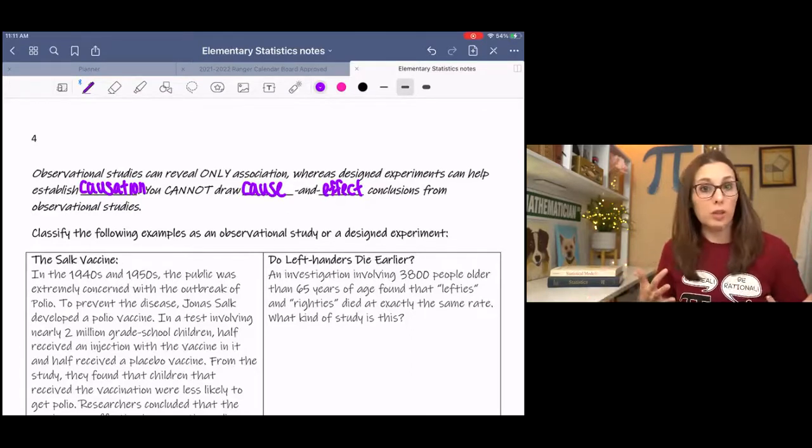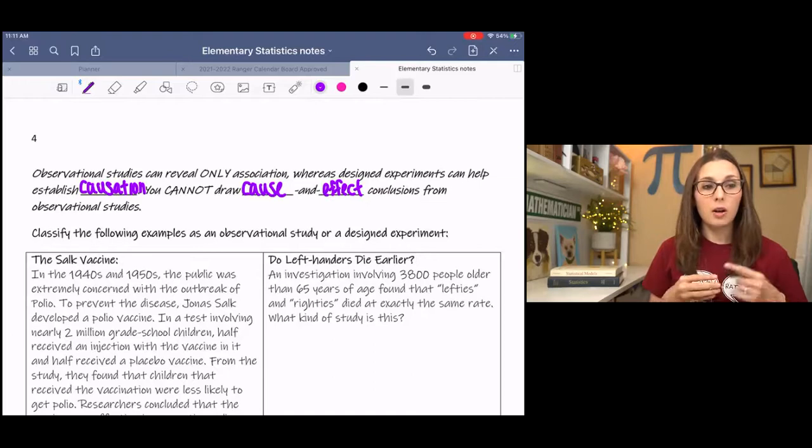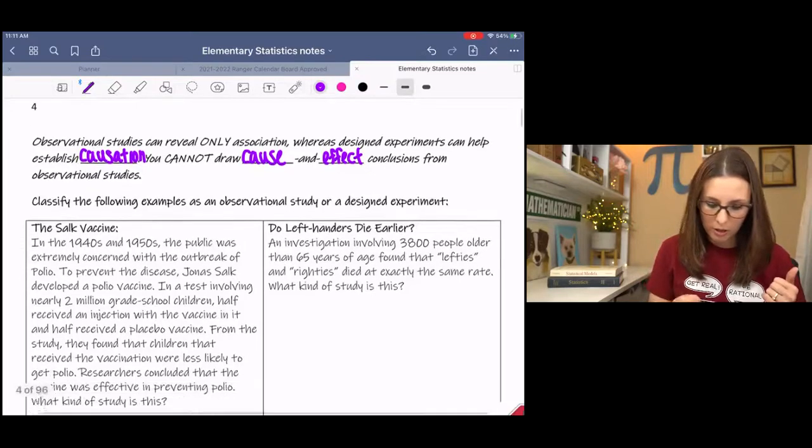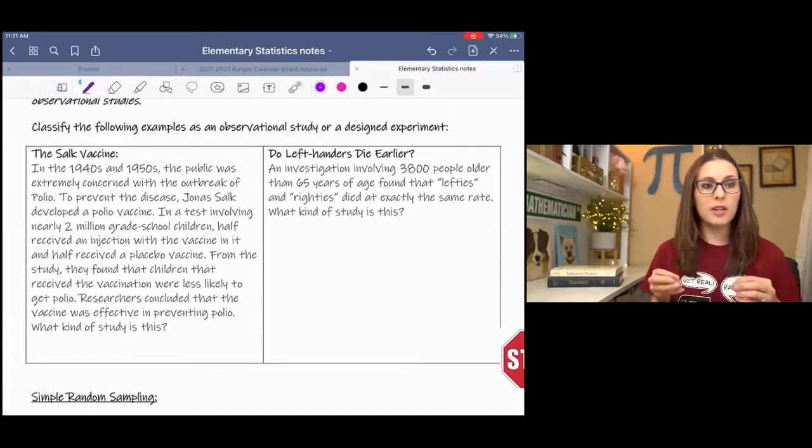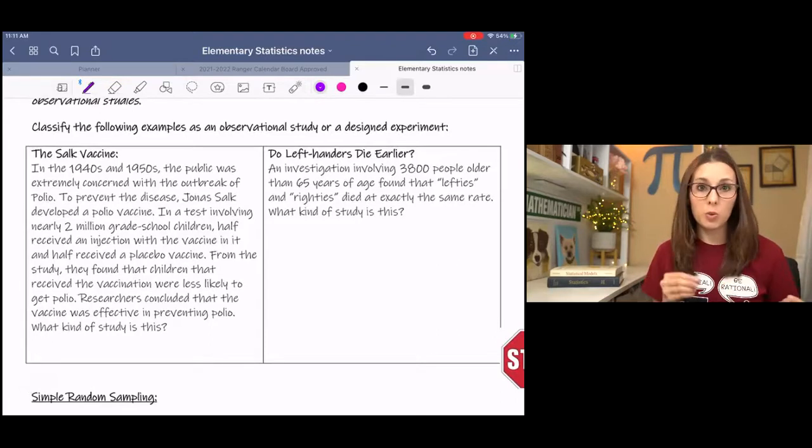Whereas in a design, so there might be confounding variables there and we can't necessarily say this caused this or the effect of this was that. But we can see association. These might be closely related. Whereas a designed experiment, since it's so controlled, then those are the types of experiments or studies that you can draw cause and effect relationships from. I have examples down here. Do me a favor and pause it and read the examples and decide which one is which. Observational study or designed experiment.